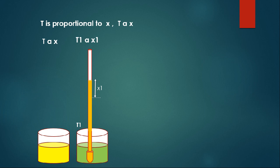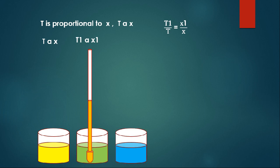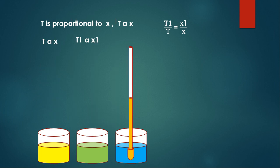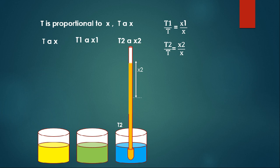I am going to divide the second equation by the first, so I can write T1 by T equal to X1 by X. Now I am dipping the thermometer in a third liquid shown in blue. The thermal expansion will take place. I can measure the thermal expansion using a scale and get X2, with temperature T2. I can write T2 is proportional to X2. Dividing by T proportional to X gives T2 by T equal to X2 by X.